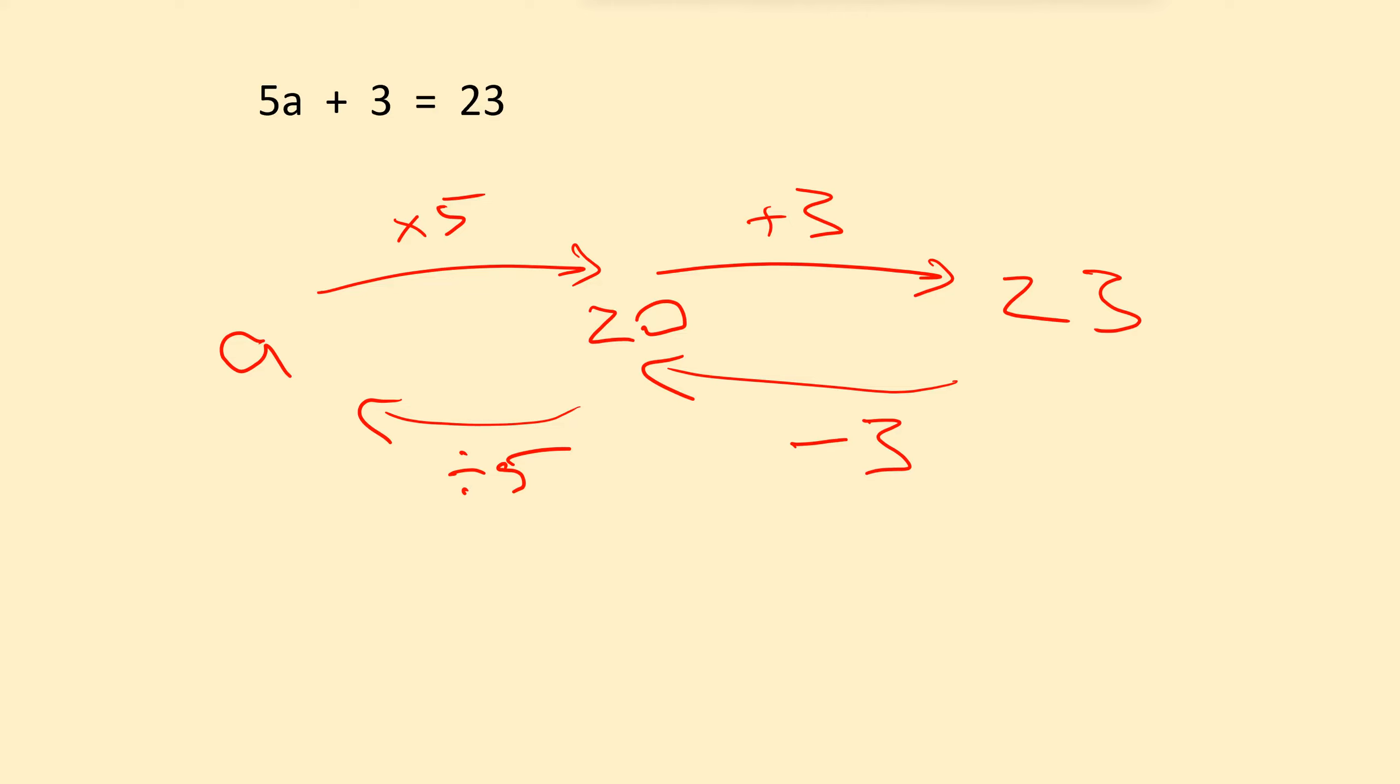But, oh look, that arrow took us back to a. So what we can say is that a equals 4. We have solved for a using the backtracking method.